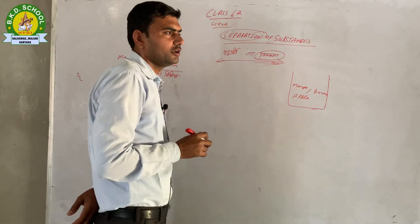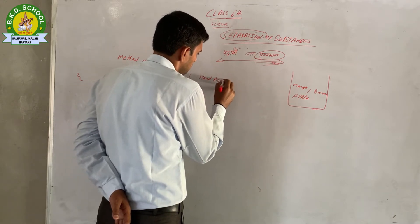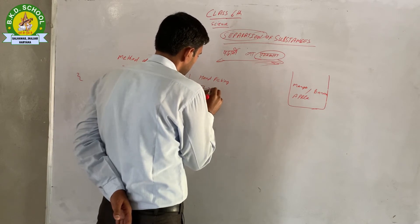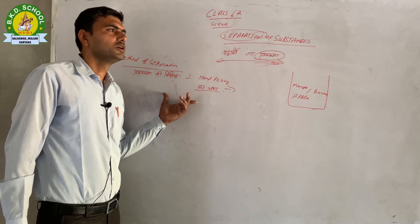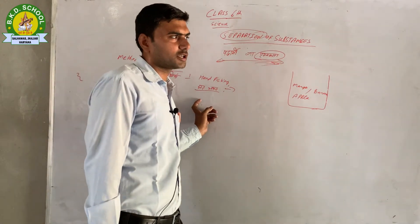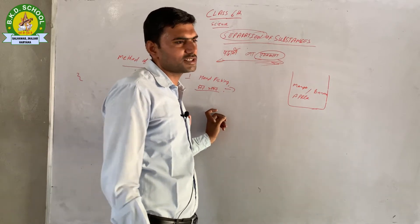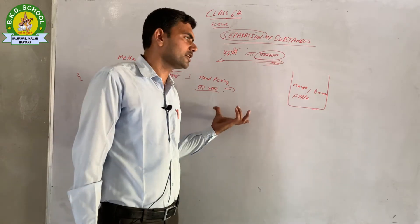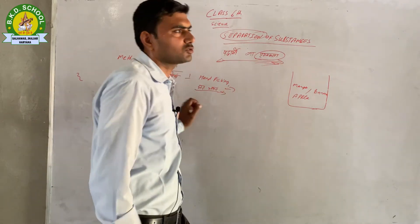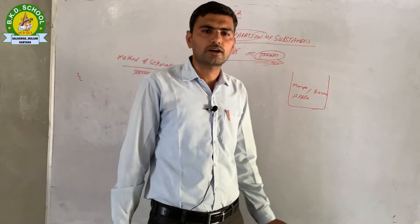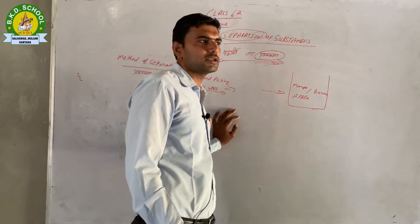पृथक्करण की विधियों में सबसे पहली है — हस्त चयन (Hand Picking)। इस विधि में हाथों द्वारा किसी भी मिश्रण से कोई भी वस्तु अलग की जाती है। इस विधि का प्रयोग तब होता है जब अशुद्धियाँ बड़े आकार की हों और आसानी से दिखाई देती हों।